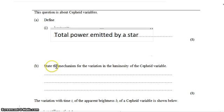And state the mechanism for the variation in luminosity of Cepheid variable stars. So the variable in Cepheid variable is their luminosity. They glow brighter and dimmer and brighter and dimmer periodically over time.